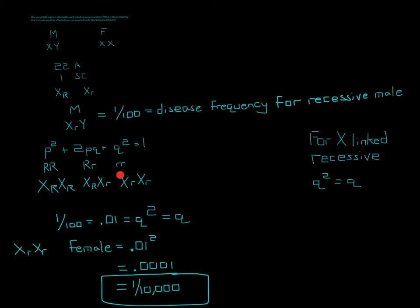So that means that Q squared - so if this is saying 1 out of 100 is the disease frequency, then it also has to equal the allele frequency because there's only one allele there that can cause this in a male.